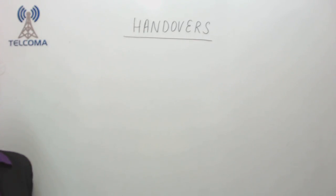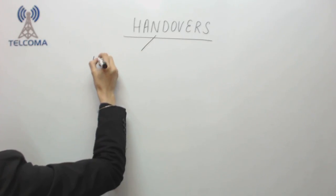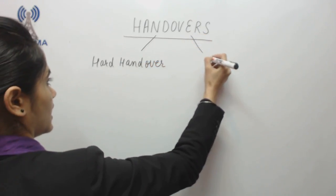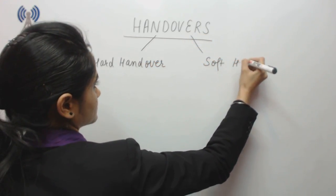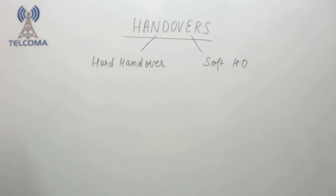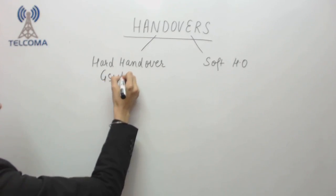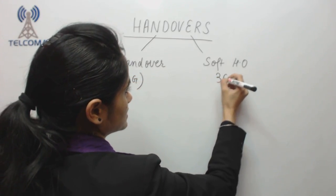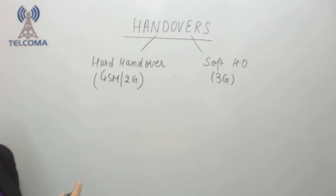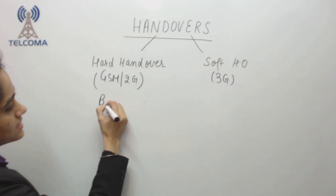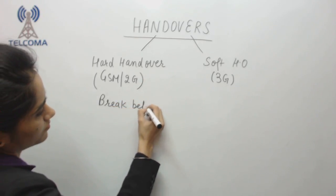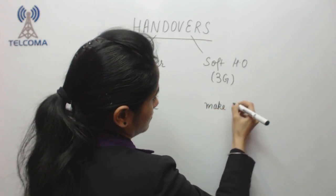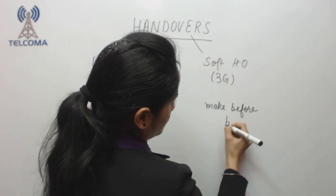Handovers are of two types: hard handover and soft handover. Hard handover is used in GSM, also called 2G, while soft handover is used in 3G. Hard handover uses the principle of break-before-make, whereas soft handover uses make-before-break.